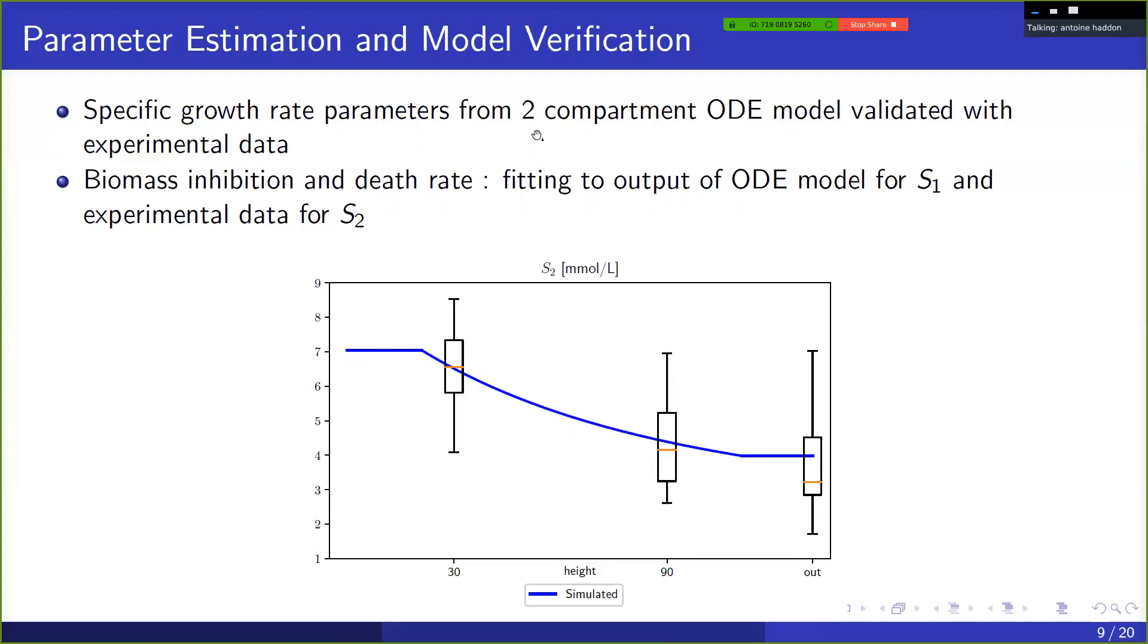It's still a spatial model. So it's a simple spatial model that only considers two compartments. And so this model was fitted against experimental data. And then we have some extra parameters, biomass inhibition and the death rates, were fitted very simply against the experimental data. So pictured here is the concentration of the second substrate at equilibrium, which is homogenous in horizontal directions. But there is a vertical variation and we see that we're able to reproduce the variations of experimental data. So these box plots represent the experimental data that we had. And so we're able to represent the vertical variation, which is what we're essentially interested in here.